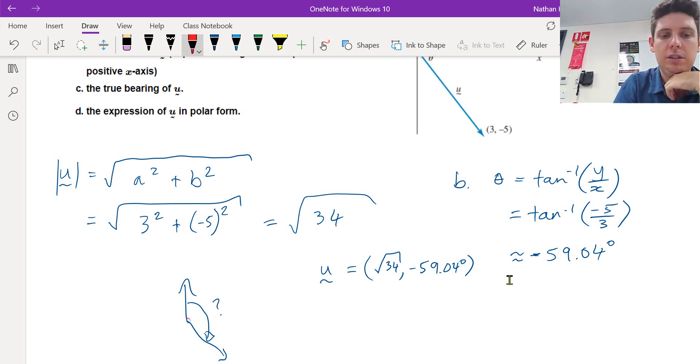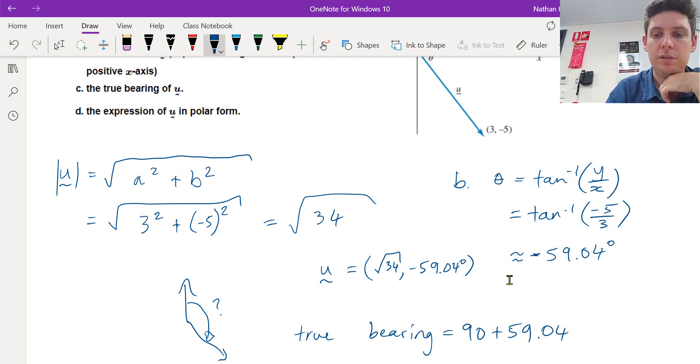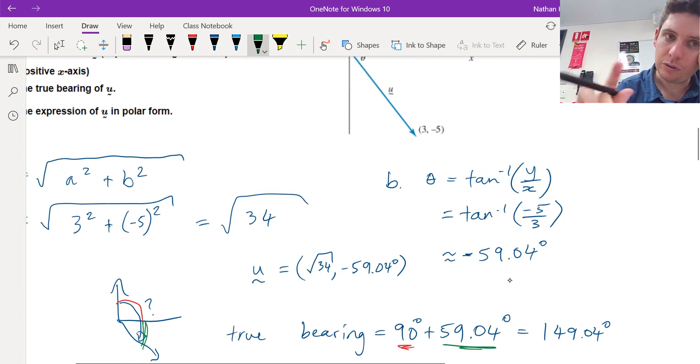Now what do we need to add to our angle to get this? Well, this first bit here is 90 degrees. So we have to just go angle in here plus 90. The true bearing is 90 plus 59.04. So if I explain it again, the 90 degrees is this bit and 59 is this bit in here. So we added those two together to get the true bearing.